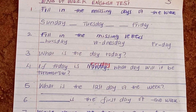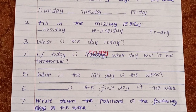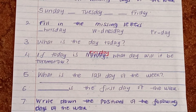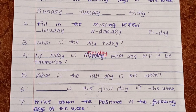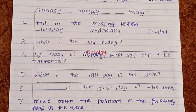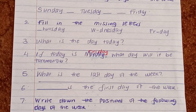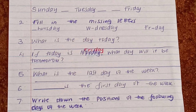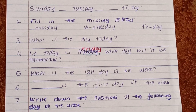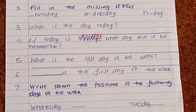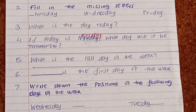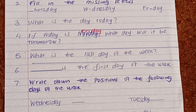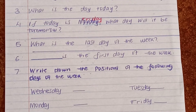Number three, what is the day today? What is the day today? Number four, if today is Friday, what day will it be tomorrow? If today is Friday, what day will it be tomorrow? Number five, what is the last day of the week? What is the last day of the week? Number six, dash is the first day of the week. Dash is the first day of the week.